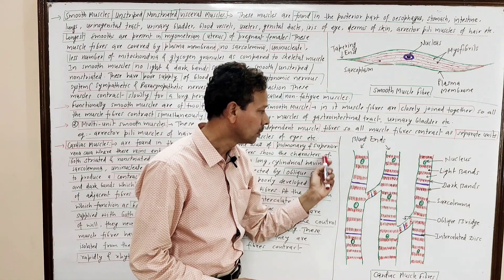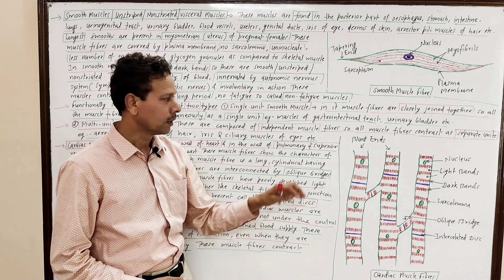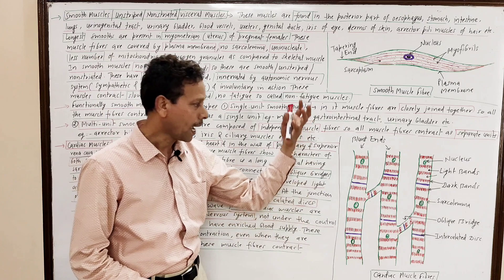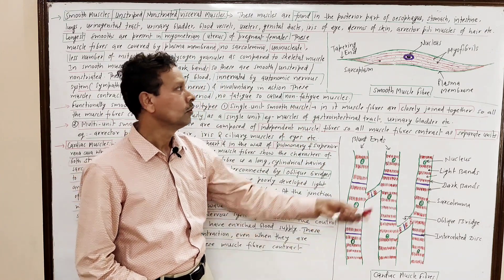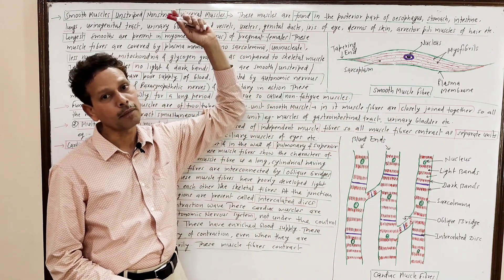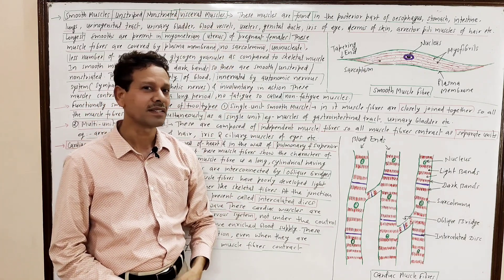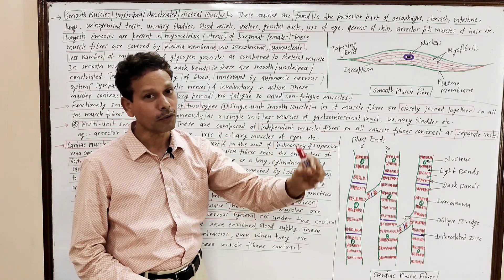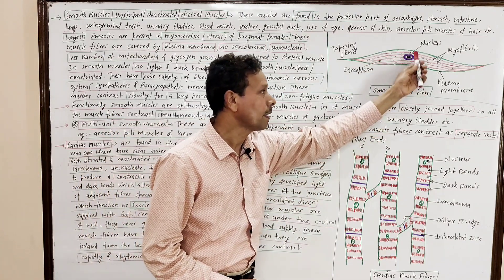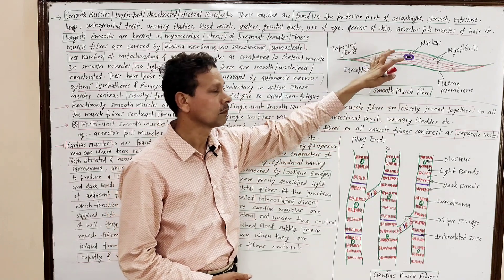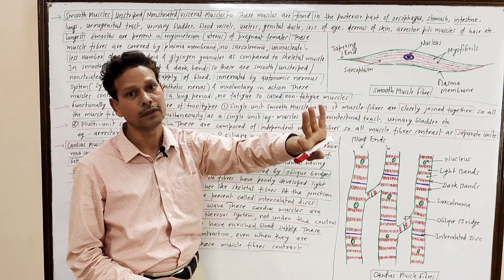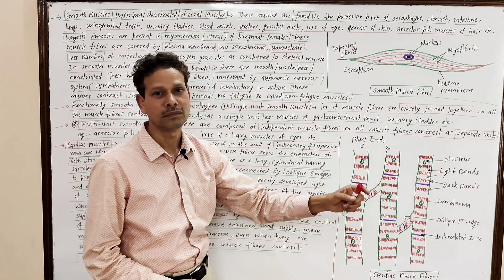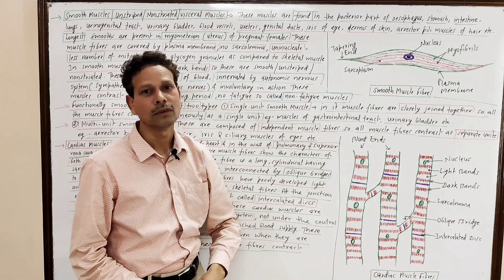The cardiac muscles have abundant blood supply, while smooth muscles have poor blood supply. Skeletal muscles undergo fatigue. Smooth muscle fibers contract slowly for a long time without getting fatigued. Cardiac muscles contract rapidly and rhythmically with no fatigue.